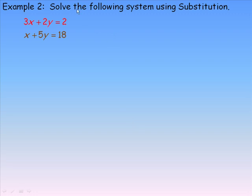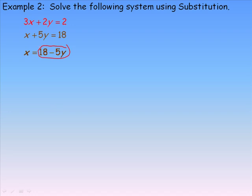Second example: solve the system 3x plus 2y equals 2, and x plus 5y equals 18. The second equation is quite easily solved for x — we rearrange and get x equals 18 minus 5y. Since that's what x equals, we can substitute 18 minus 5y in place of x in the other equation.